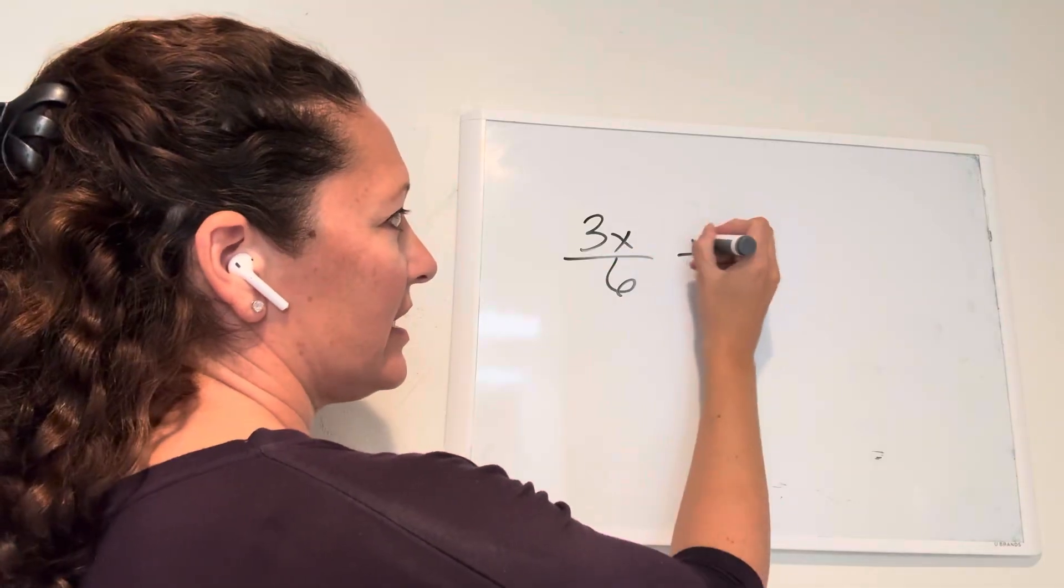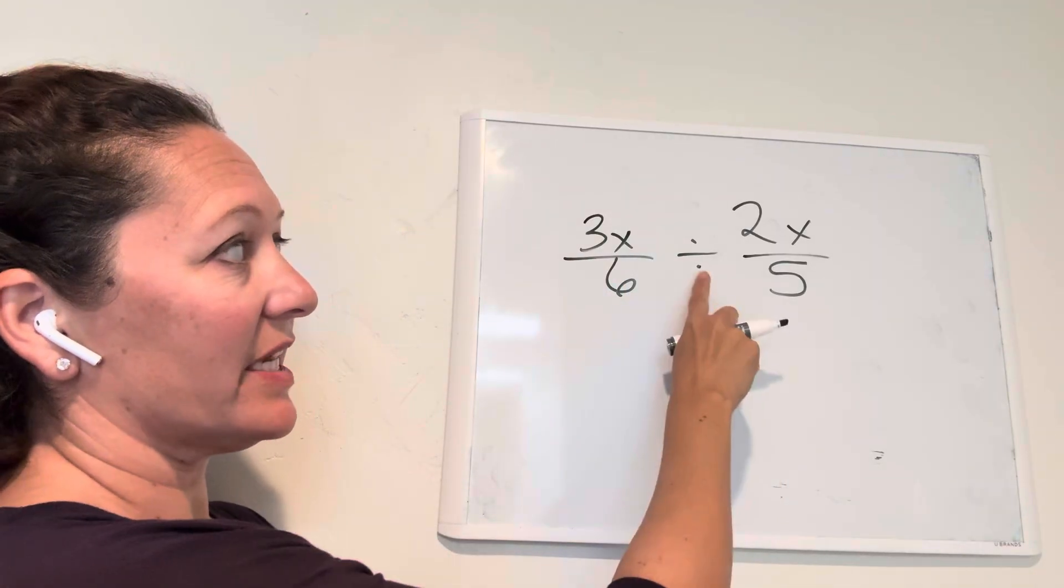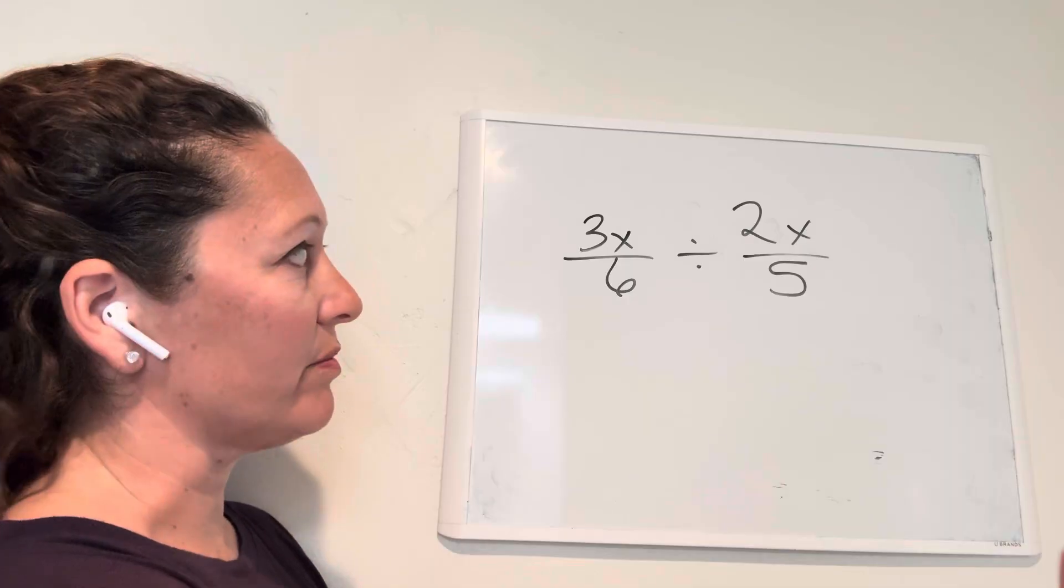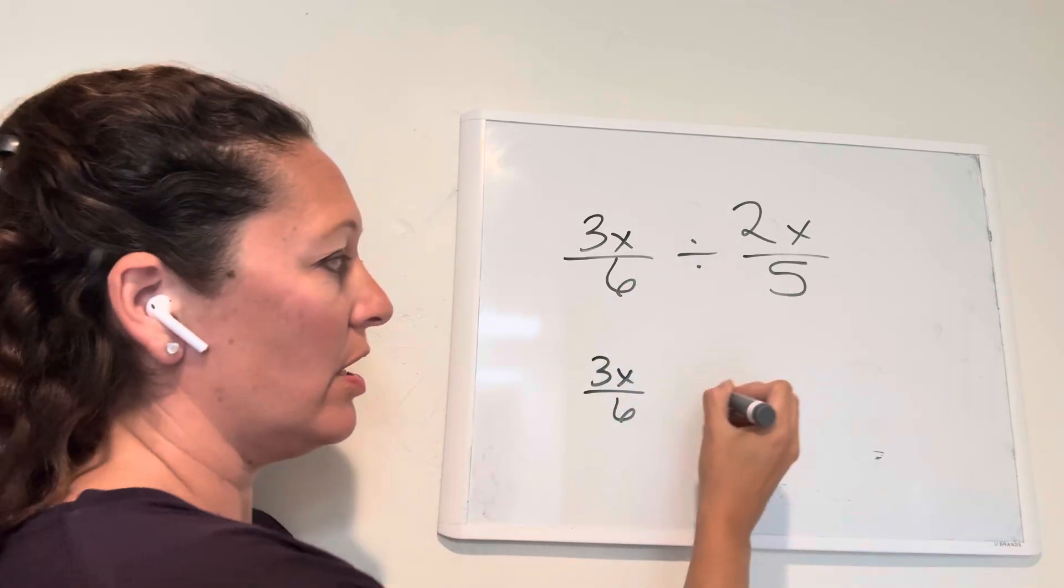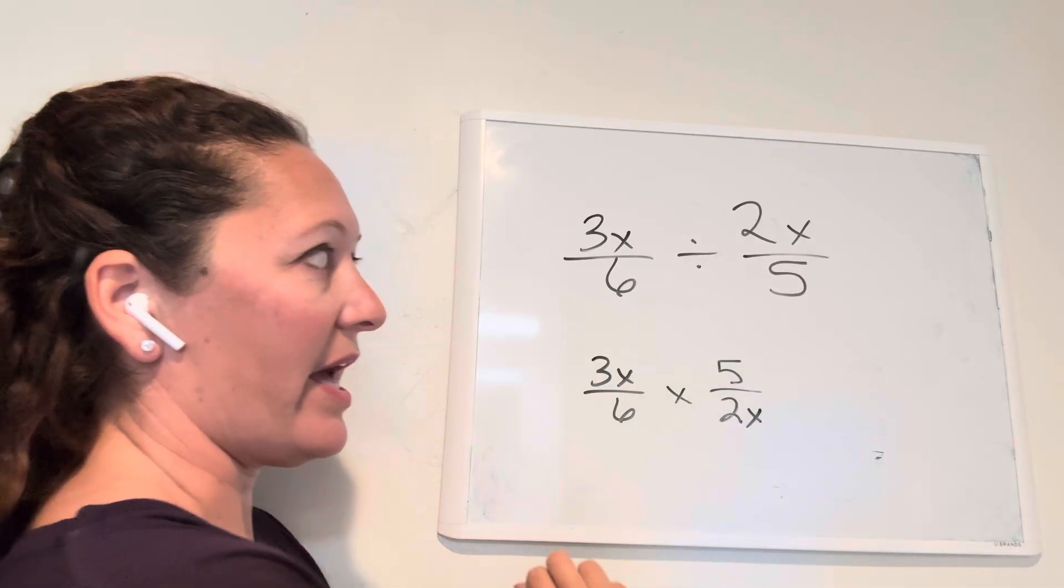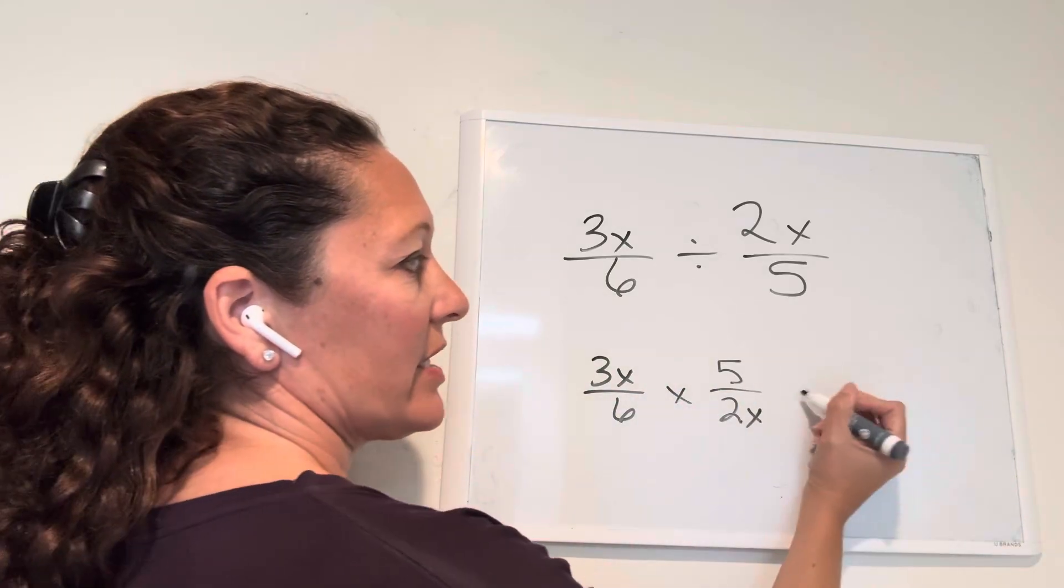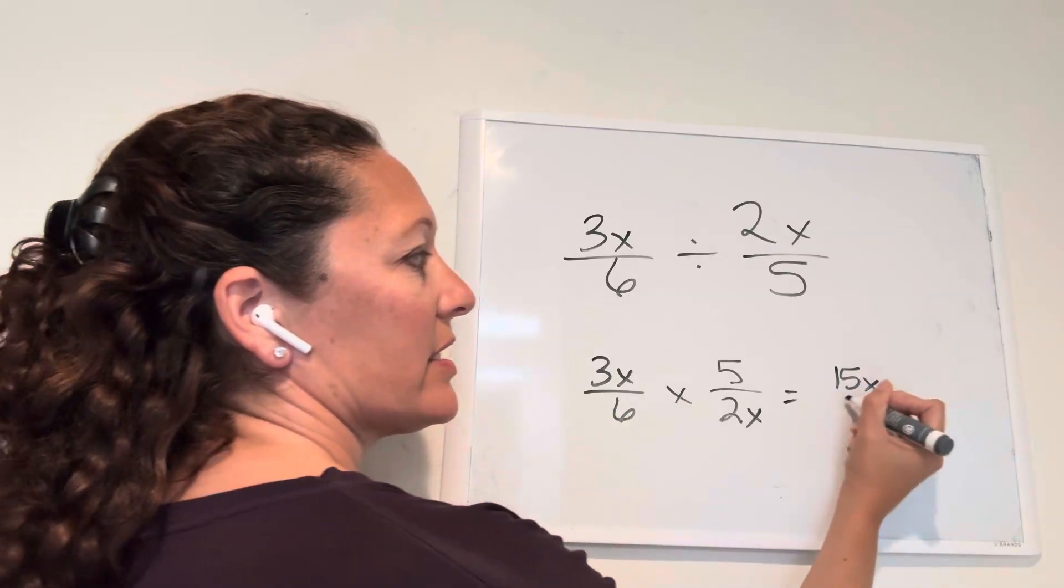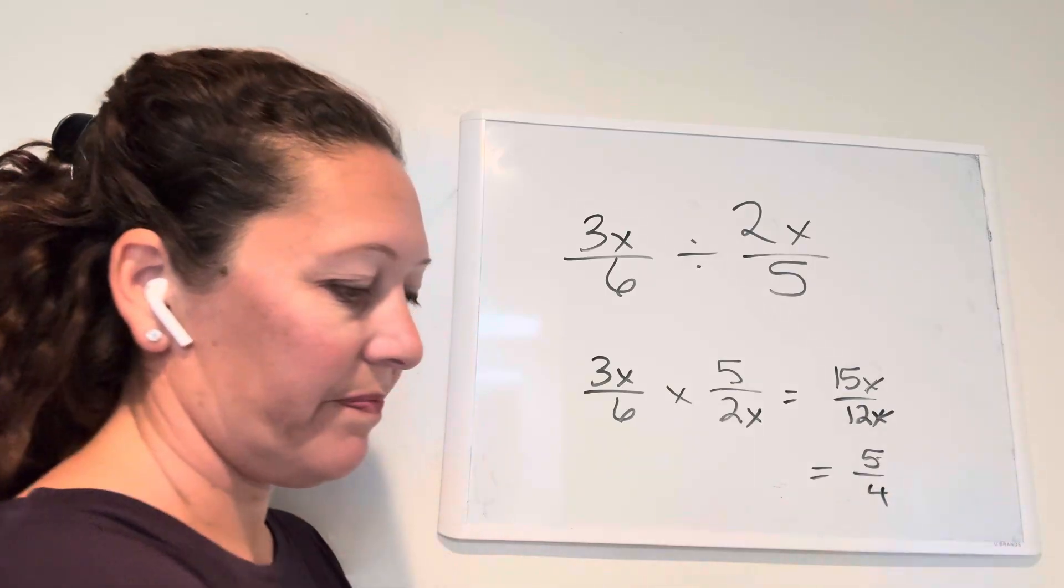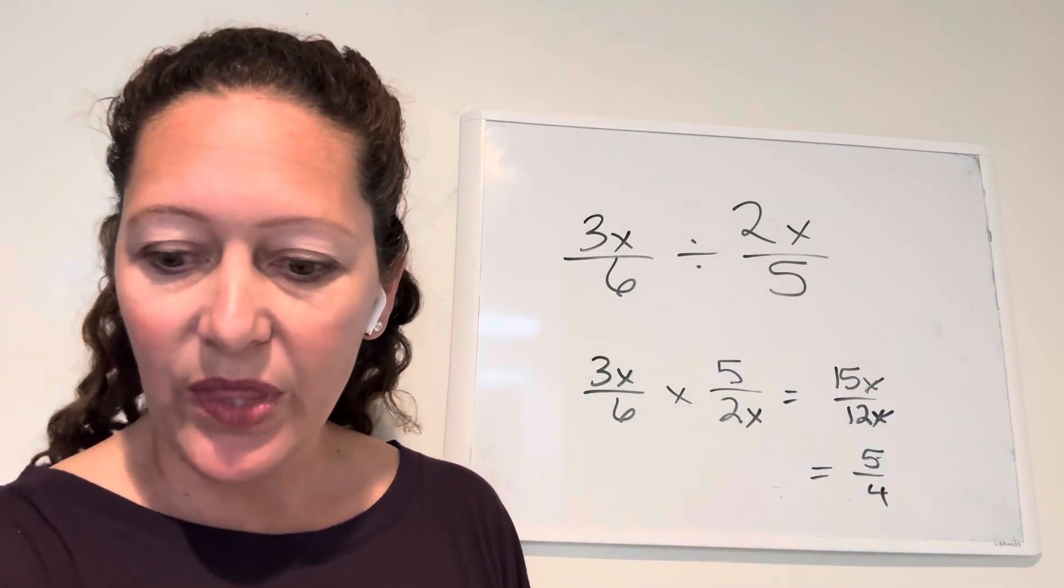Three x divided by six, all divided by two x divided by five. You can multiply by the reciprocal and it's easier to calculate. Three x over six doesn't change, but we multiply by the reciprocal, which is flipping that fraction to five over two x. We change the sign to multiplication and multiply straight across. Three x times five is 15x, six times two x is 12x. The x's cancel, 15 over 12 simplifies, and you end up with five over four.